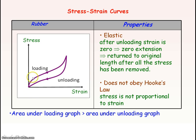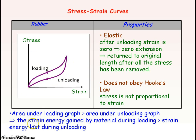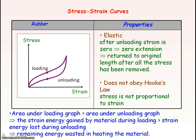The area under the loading curve is greater than the area under the unloading curve. The area under the graph is an indicator of the strain energy or elastic potential energy given to and taken from the system. This means the elastic potential energy gained during loading is greater than that lost during unloading, so energy has been lost — wasted as heat — while the material's length was changed during deformation.